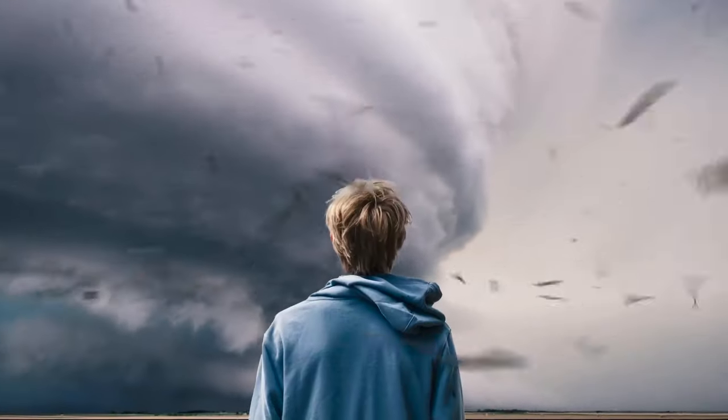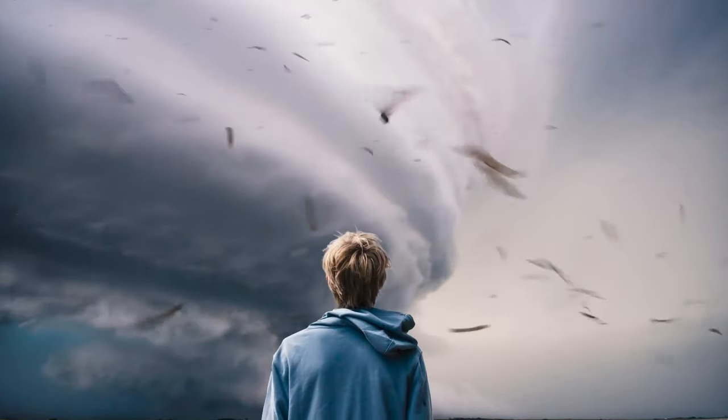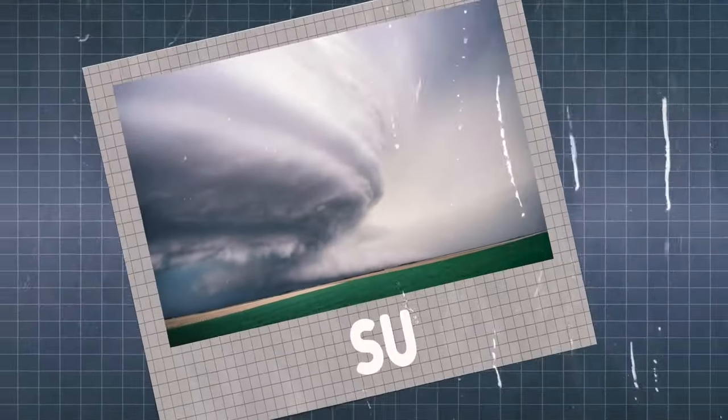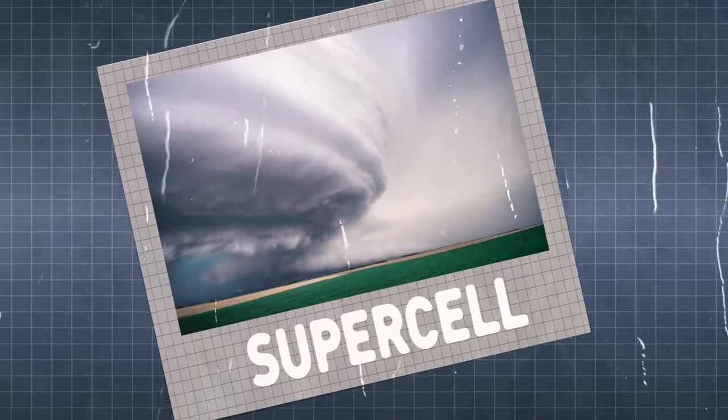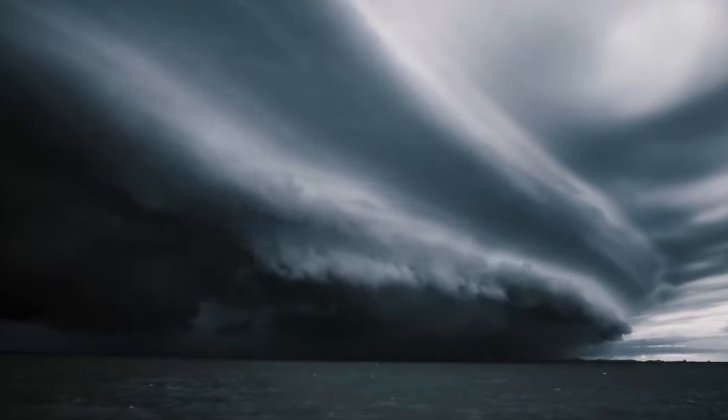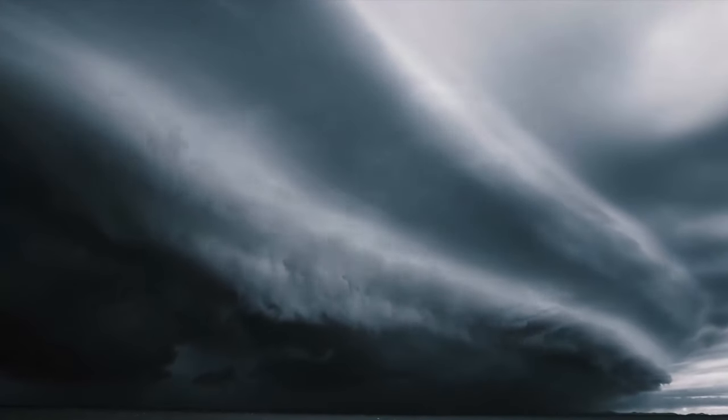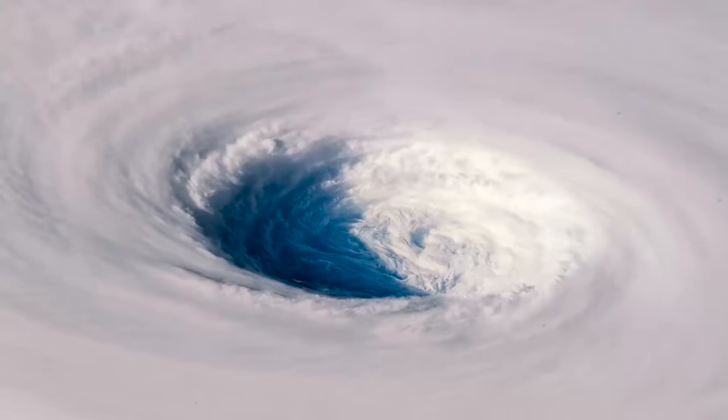Look at this ominous dark cloud. Is it rotating? What on earth is happening here? What you see is called a supercell. It's a storm, often a thunderstorm, that contains an updraft rotating about a vertical axis. That's why they're also called rotating thunderstorms.